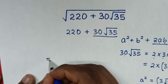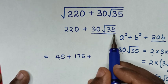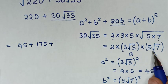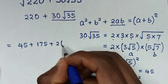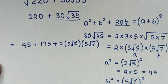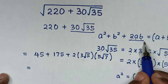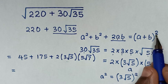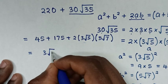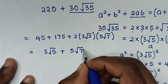So the full expression under the square root equals 45 plus 175 plus 2 times (3 square root of 5) times (5 square root of 7). This is now in the form a squared plus b squared plus 2ab, which equals (a plus b) squared. So it is equal to (3 square root of 5 plus 5 square root of 7) squared.